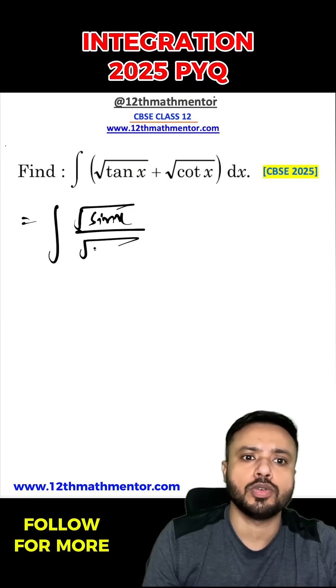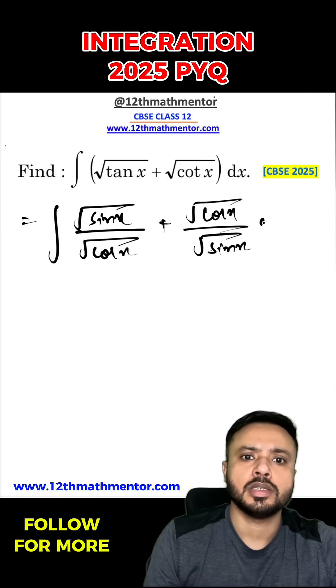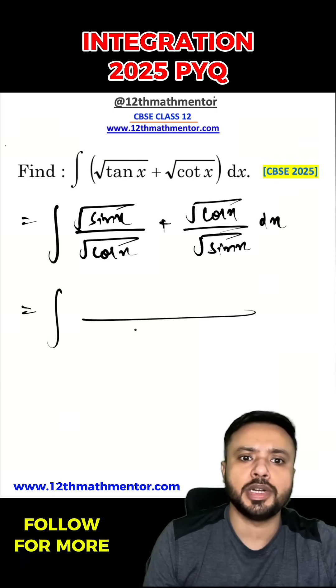I'll write root of tan x as root of sine x by root of cos x plus root of cos x by root of sine x dx. Now I will take the LCM of the denominator, so I can write it as root of sine x cos x in the denominator. In the numerator I'll have sine x plus cos x dx.